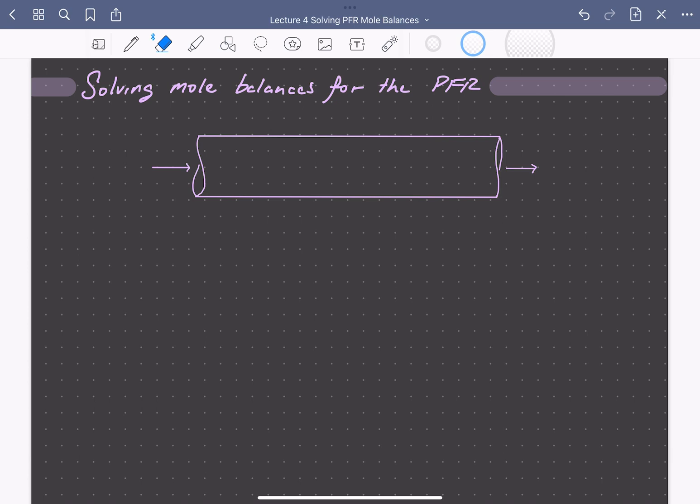The mole balance for our ideal plug flow reactor looks like this: the derivative of the molar flow rate of some species A with respect to volume is equal to the rate of formation of that species.